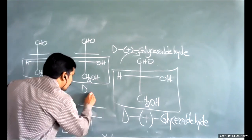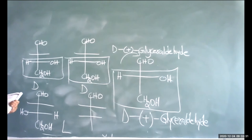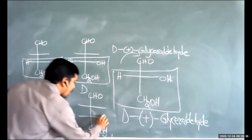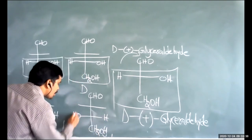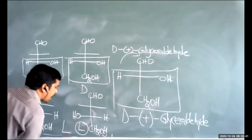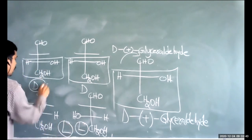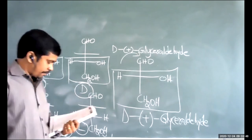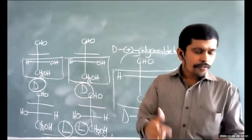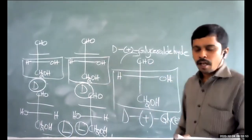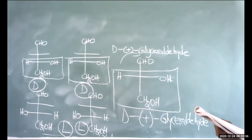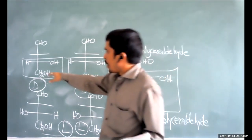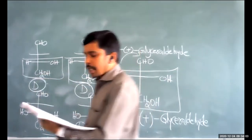The fourth compound: CHO at top, CH2OH at bottom, H on the right side and OH on the left side — this is L configuration. So the four compounds have configurations: D, D, L, L. For question 27, option four gives: D-erythrose, D-threose, L-erythrose, and L-threose.